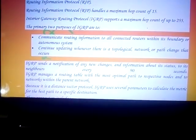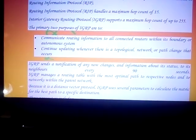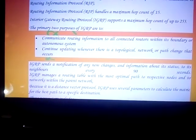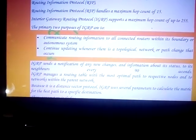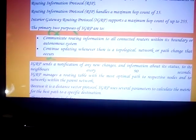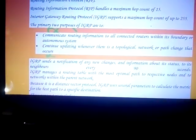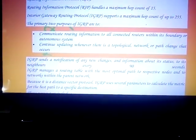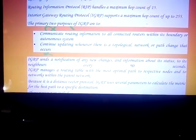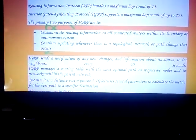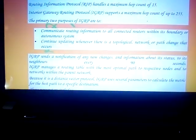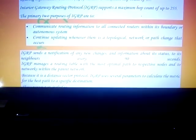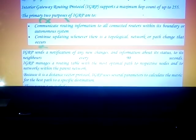IGRP sends a notification of any new change or information about its state to its neighbor routers every 90 seconds — that is, every one and a half minutes. Each router is refreshed due to this IGRP. IGRP maintains a routing table with the most optimal path to respective nodes, and this information is shared between the parent network because it is a distance vector protocol.